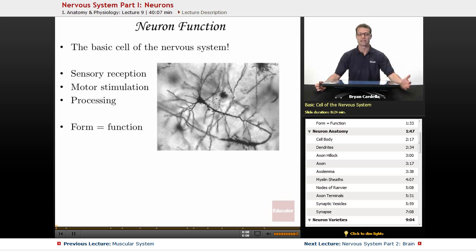Neurons are the basic cell of the nervous system. Your brain alone has a hundred billion neurons, and then besides the brain, you've got the spinal cord and all the other nerves. So you've got billions and billions of neurons in your body.